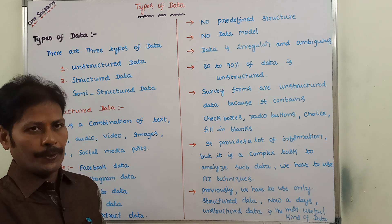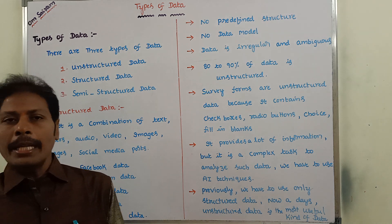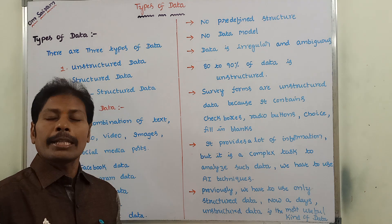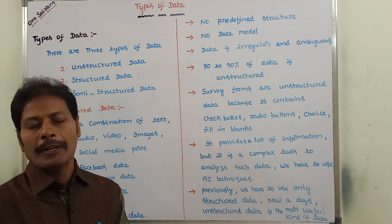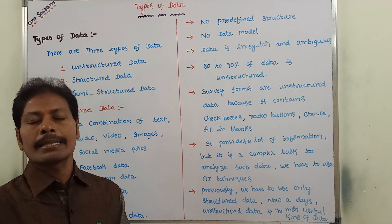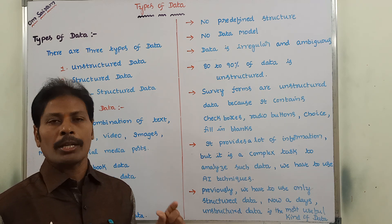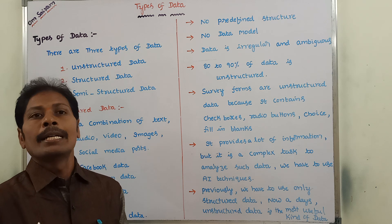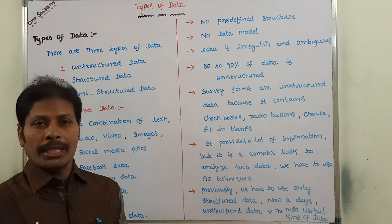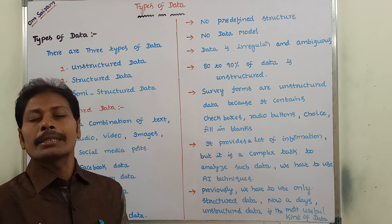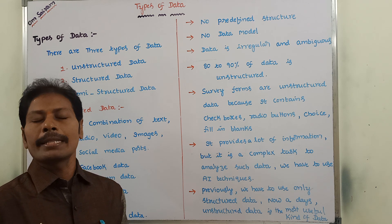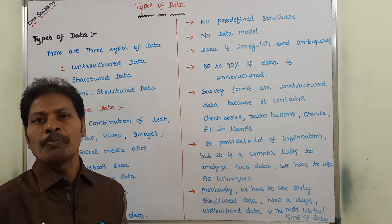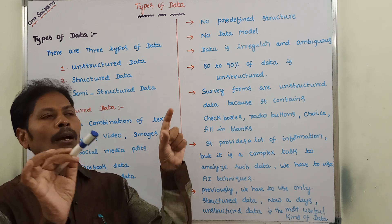Generally, there are three types of data. First one is unstructured data. Second one is structured data. Third one is semi-structured data. These are the three types of data.